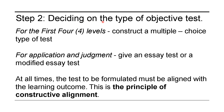Step 2: Deciding on the type of objective test. The test objectives guide the kind of objective tests that will be designed and constructed by the teacher. This means aligning the test with the lesson objective or outcome. For example, for the first four levels — remembering, understanding, applying, and analyzing — you can construct a multiple-choice type of test. For application or evaluation, you can give an essay test or modified essay test.